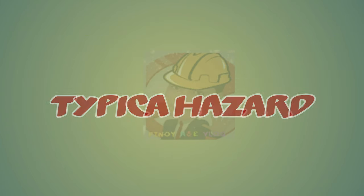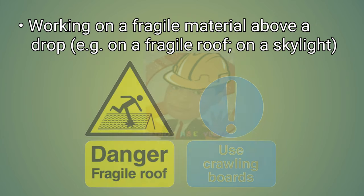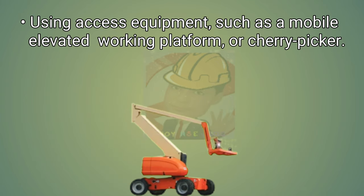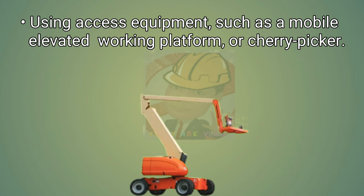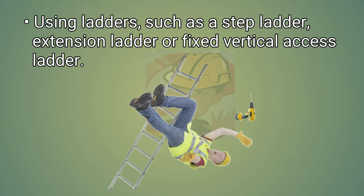Falls from height. Typical hazards: working next to an unprotected edge, for example on a flat roof, on the deck of a partly built scaffold, by the open doors of a lift shaft when the lift is at another floor, by an excavation. Working on a fragile material above a drop, for example on a fragile roof, on a skylight. Using access equipment such as a mobile elevated working platform or cherry picker. Using ladders such as a step ladder, extension ladder or fixed vertical axis ladder.